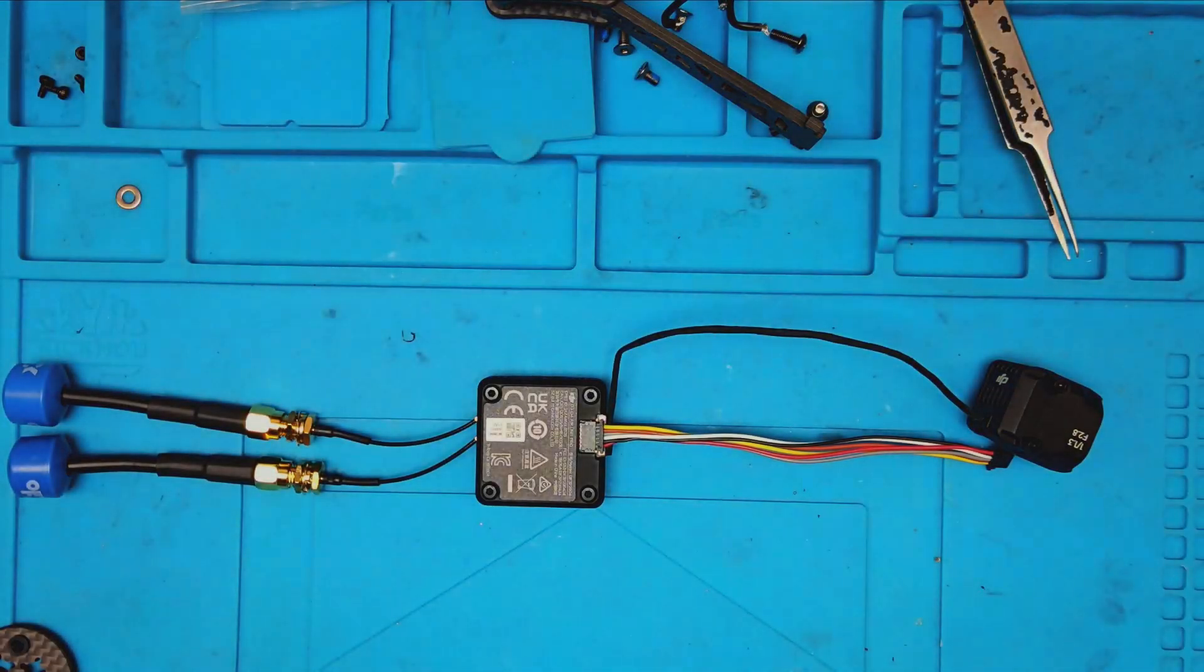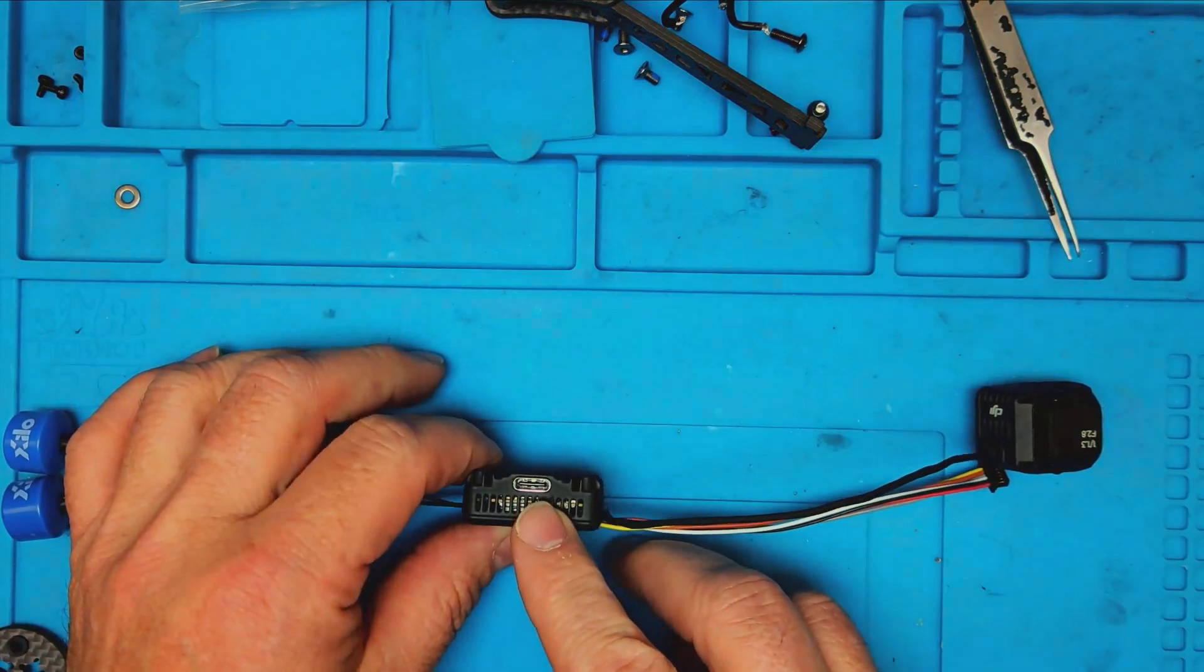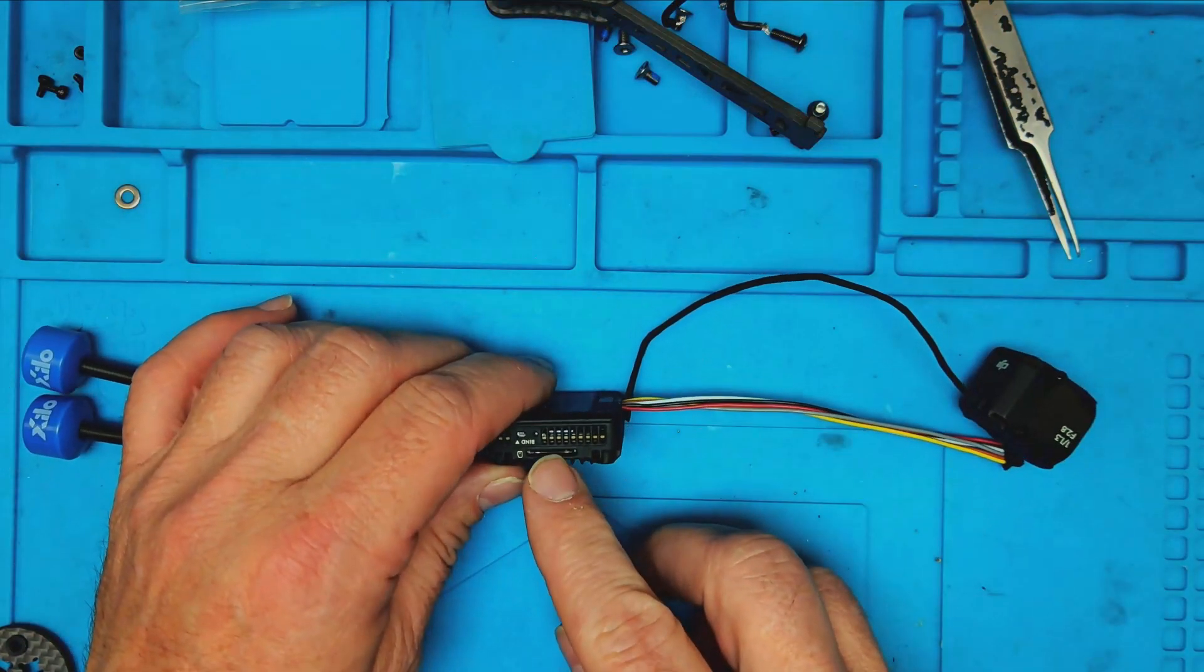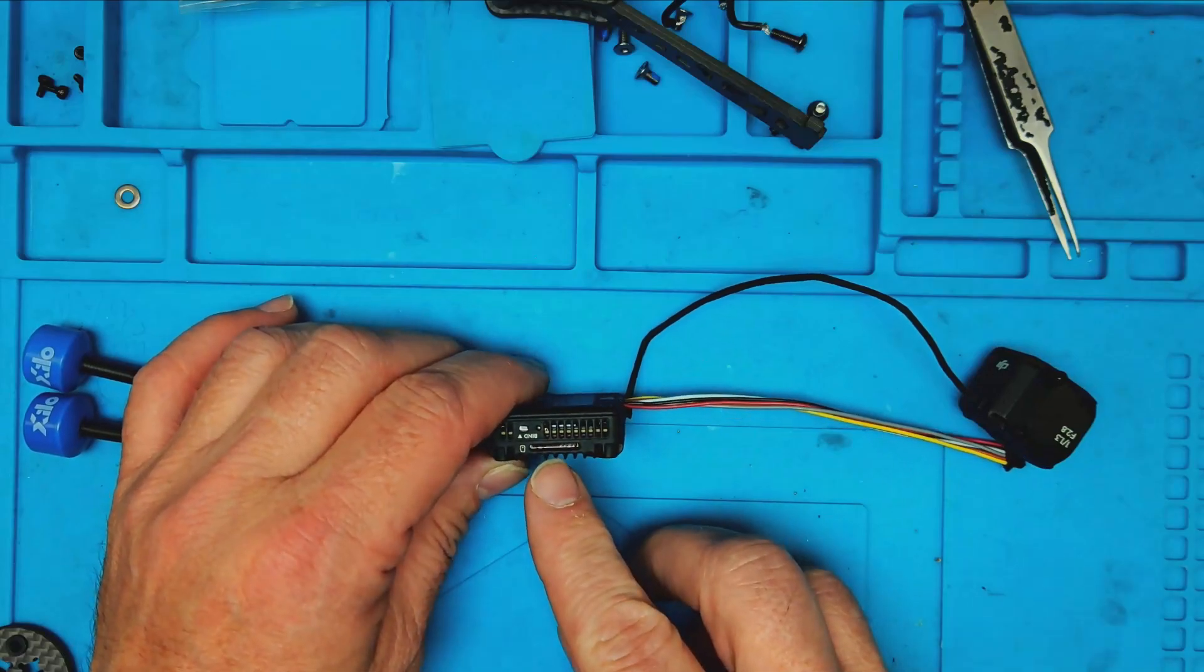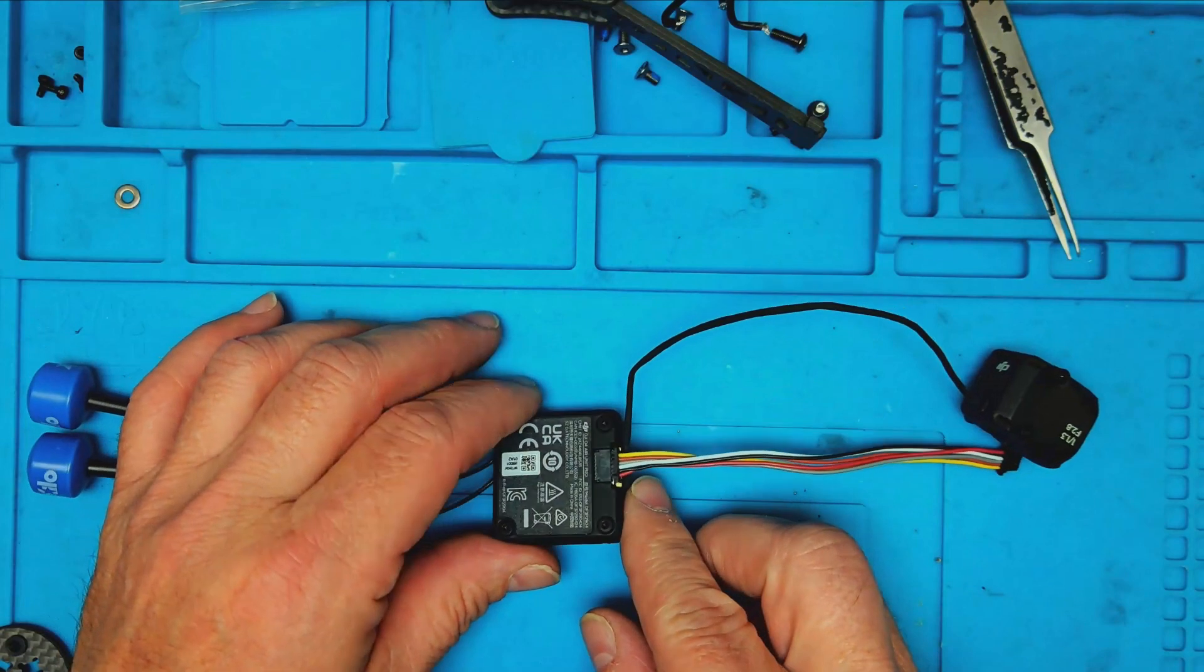Greetings, ladies and gentlemen. What you see before you here is an O4 air unit. This O4 air unit will be installed in a frame where I will not be able to access the ports for activating it. So I'm going to make sure I have installed my SD card before installing it in this frame.